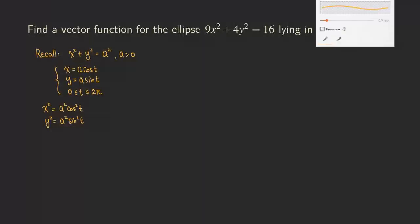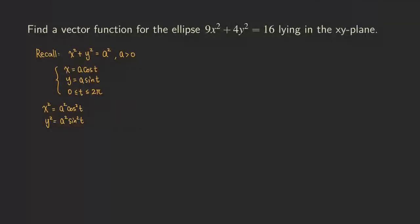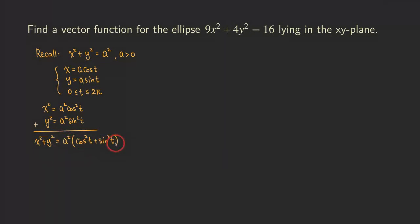When you add the two equations together, you get x squared plus y squared on the left side. On the right-hand side, we can factor out a squared, giving us a squared times (cosine squared of t plus sine squared of t). Cosine squared plus sine squared with the same argument t equals 1, so we simply get a squared. So x squared plus y squared equals a squared — the same equation we started with.